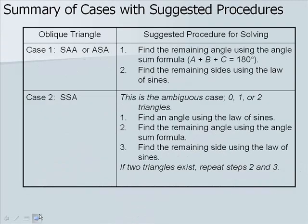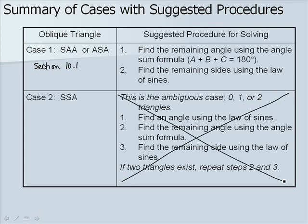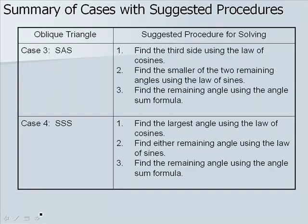Here is a summary of the possible cases we can encounter with suggested procedures to follow. Case 1 was described in Section 10.1 where we use the Law of Sines. Case 2 is the ambiguous case and we won't be looking at it in this course. Case 3 was our first example — side-angle-side — where we find the third side using the Law of Cosines, find the smaller remaining angle using the Law of Sines, then find the last angle using the angle sum formula. Case 4 was side-side-side, and the procedure is about the same.